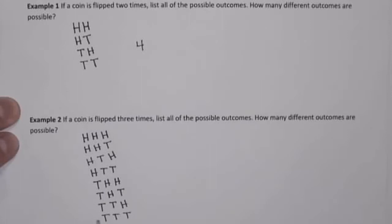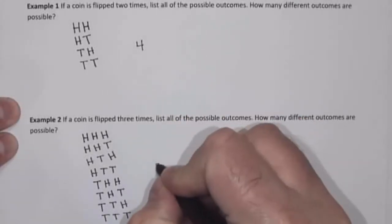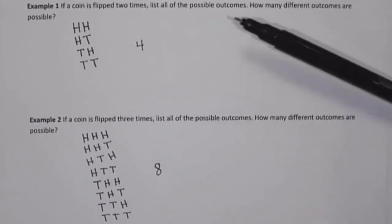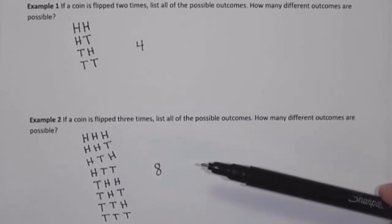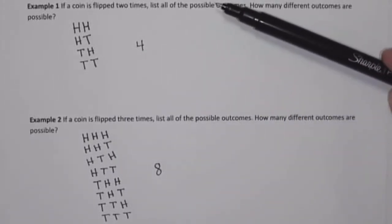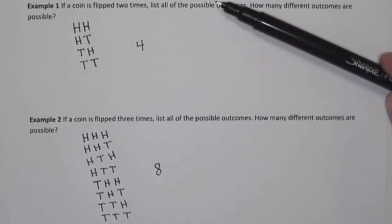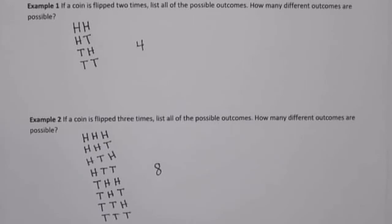So we've listed all the possible outcomes that could occur if we flip a coin three times. Altogether there are eight different outcomes. The idea is that if we want to count the number of ways things can occur, one approach is to use a systematic list — literally listing all outcomes and counting them.